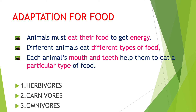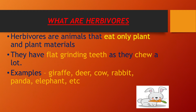The three types are herbivores, carnivores, and omnivores. What are herbivores? Herbivores are animals that eat only plants and plant materials. They have flat grinding teeth as they chew a lot. Examples: giraffe, deer, cow, rabbit, panda, elephant, etc.